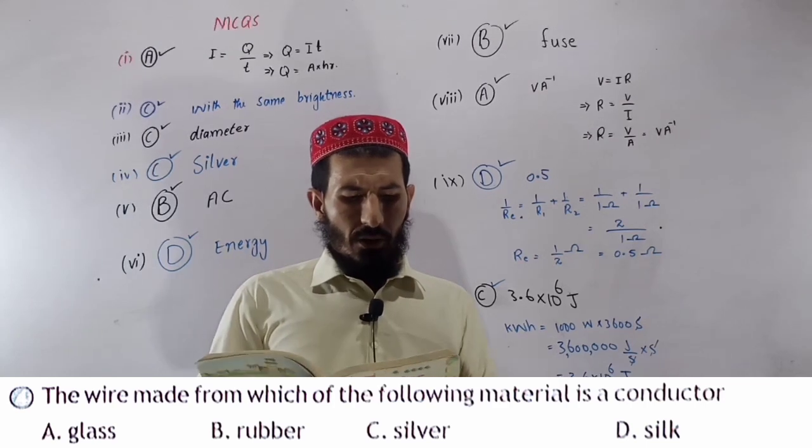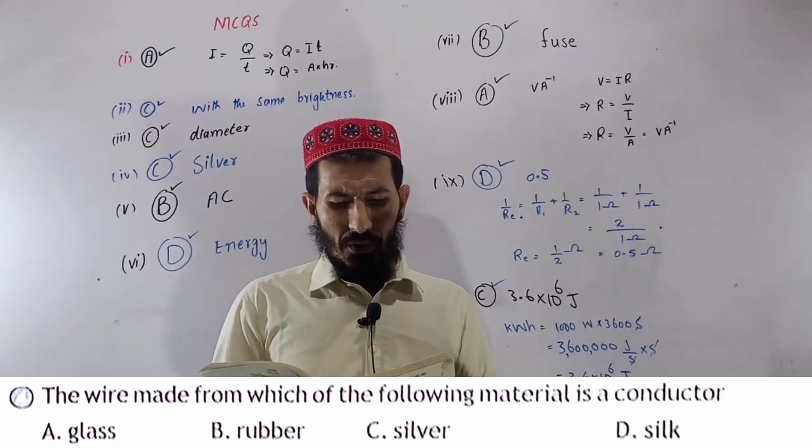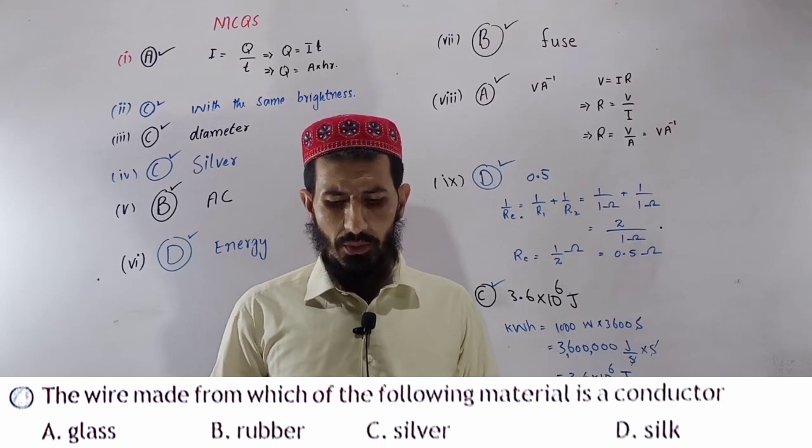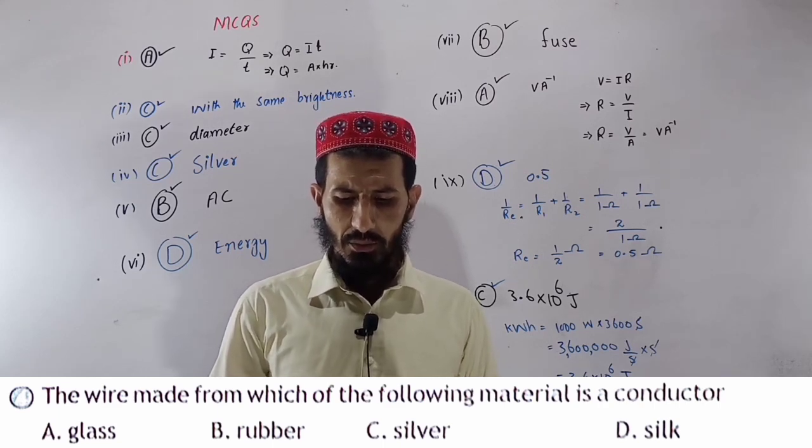The wire made from which of the following material is a conductor? Silver is the conductor. Answer is option C.